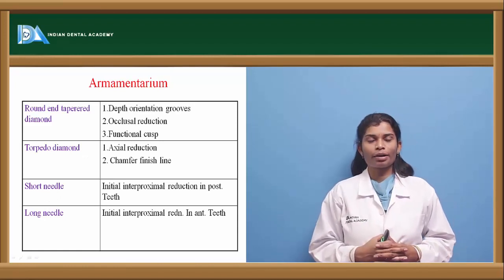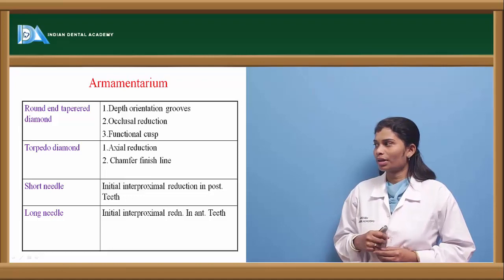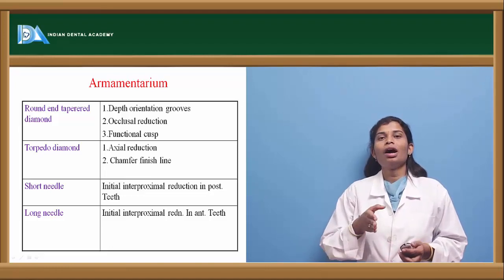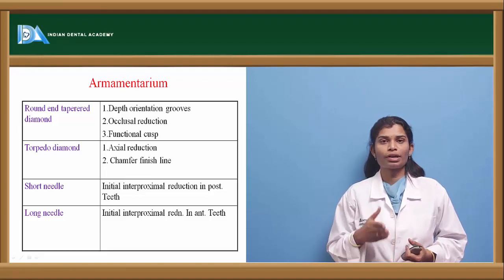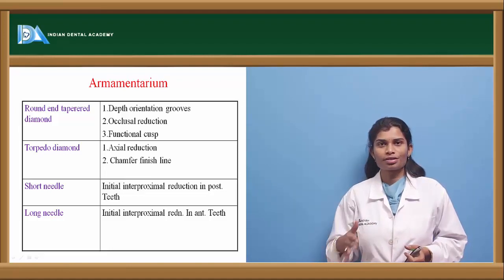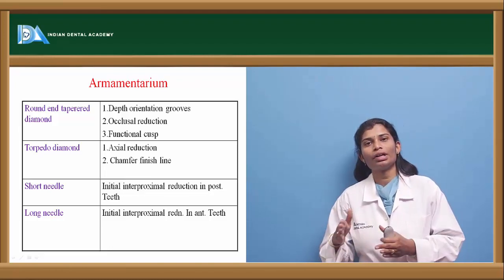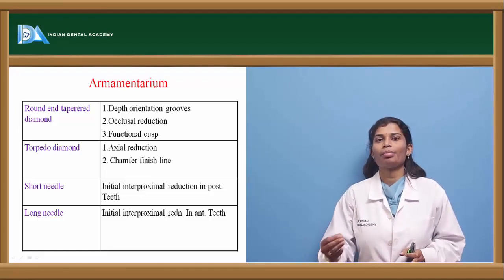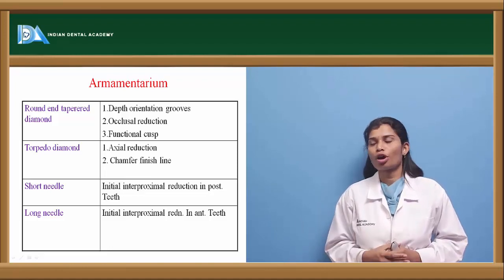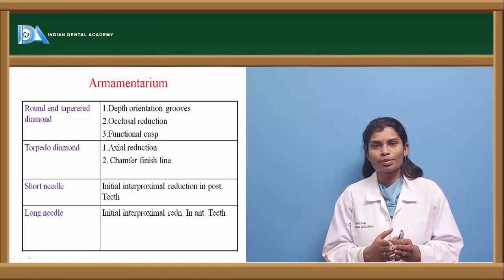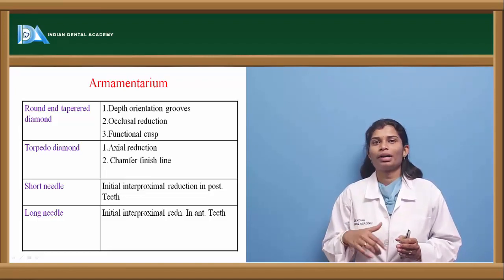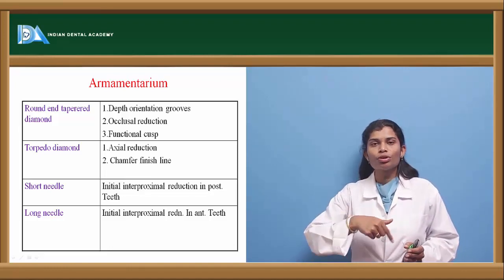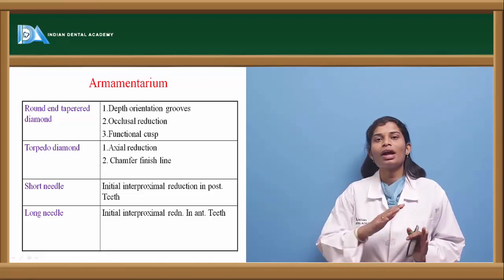Armamentarium for partial veneer crown preparation: A round tapered diamond is used first to place depth orientation grooves, creating an index of the amount of tooth reduction required, followed by occlusal reduction and the functional cusp bevel. A torpedo diamond is used for axial reduction and placement of a chamfer finish line — its rounded flame-shaped end allows an even, smooth chamfer finish line and uniform axial reduction.